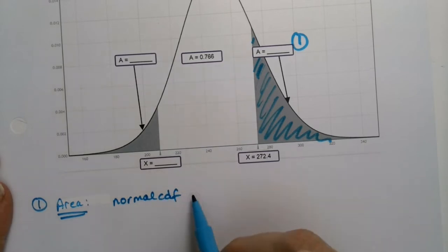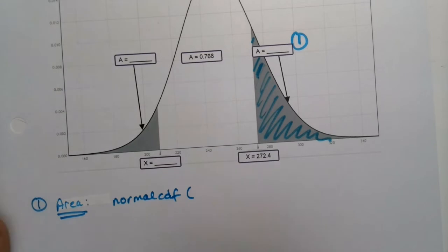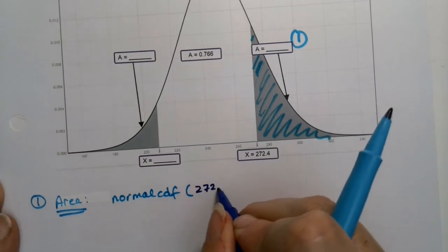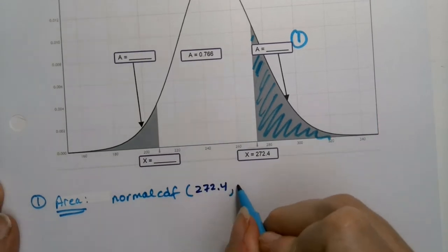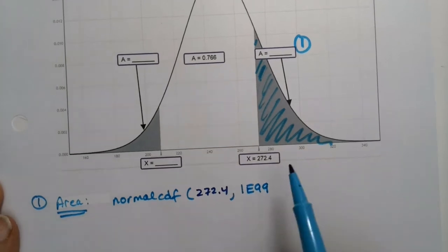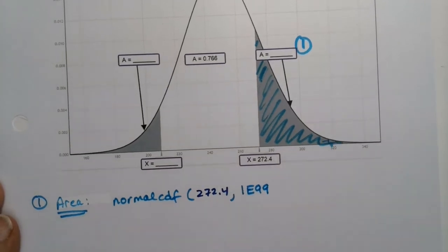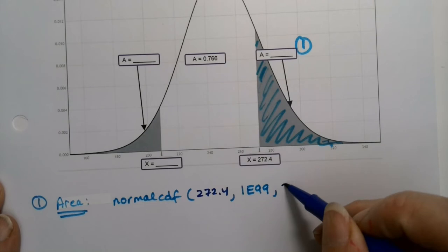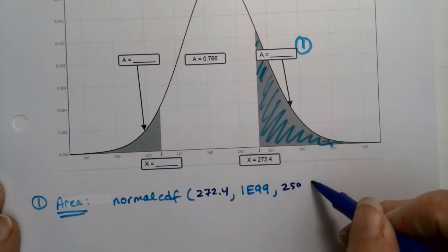left bound is 272.4. The upper bound is 1E99, because we shaded to the right tail. That right tail is shaded. For normal CDF, we'll be using 1E99.